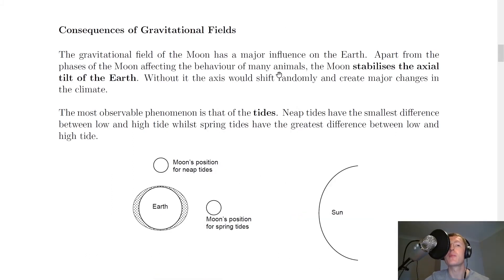Next, we're going to look at some consequences of gravitational fields. The gravitational field of the Moon has a major influence on the Earth. Apart from the phases of the Moon affecting the behaviour of many animals, the Moon stabilises the axial tilt of the Earth. It basically stops it from wobbling. Without it, the axis would shift randomly and create major changes in the climate. So seasons wouldn't be the same and that could cause problems for the growing of food and crops.